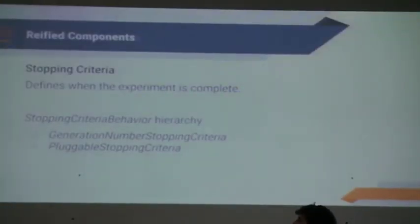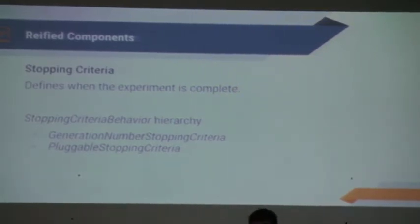Stop criteria. This step defines when you finish the experiment. There are two implementations. One is simple: at a generation number, stop the experiment. And the other is configurable, because it receives a block or a polymorphic object, and it determines when the experiment is ending.